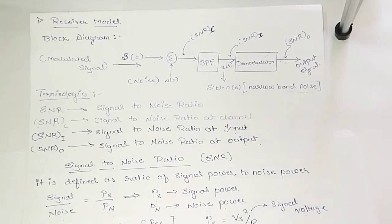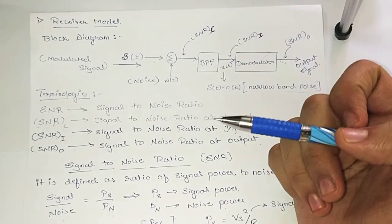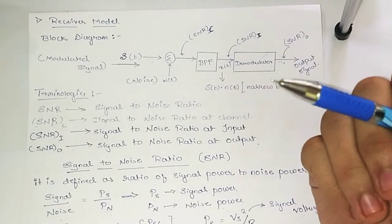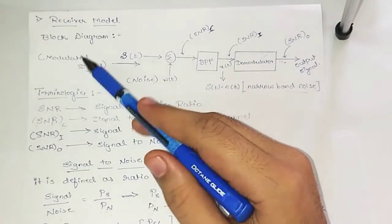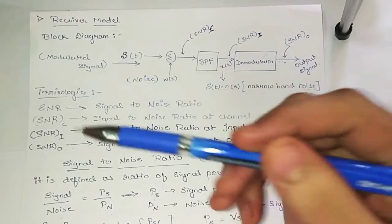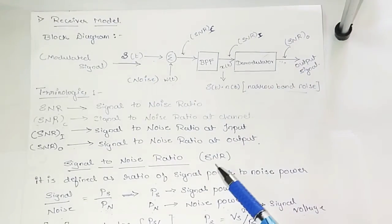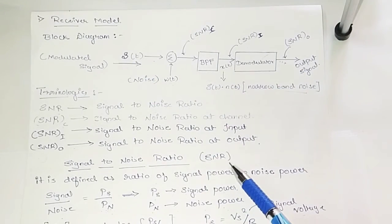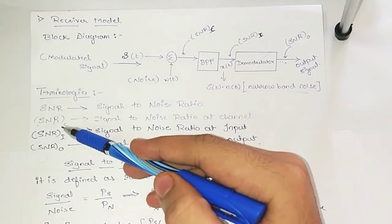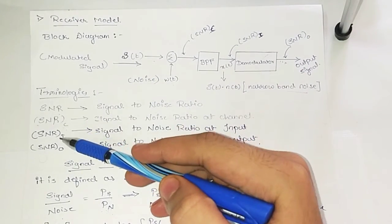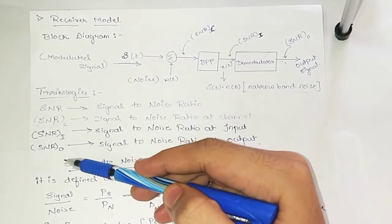Now we will start with today's lecture. In this video, I will explain about the receiver model and signal to noise ratio — SNR — and the terminologies SNRC, SNRI, and SNRO.